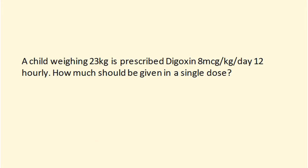Examples are the best way to deal with these. A child weighing 23 kilograms is prescribed digoxin, 8 micrograms per kilogram per day, 12 hourly. So they're getting it every 12 hours. How much should he be given in a single dose? The way we deal with this first is we have to work out how much medication they have to get for the day.